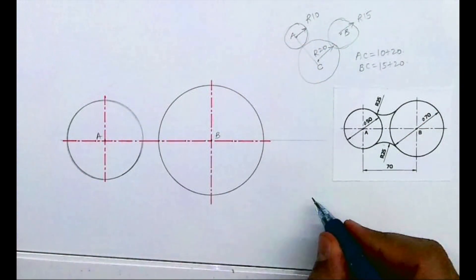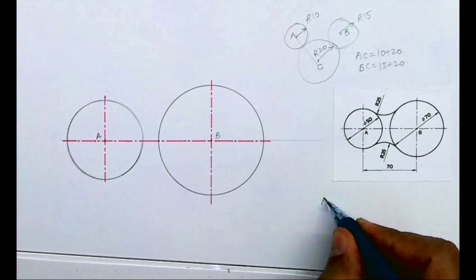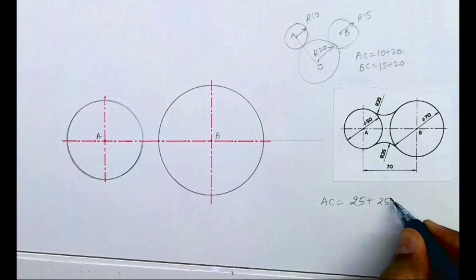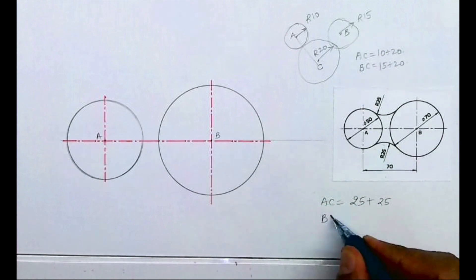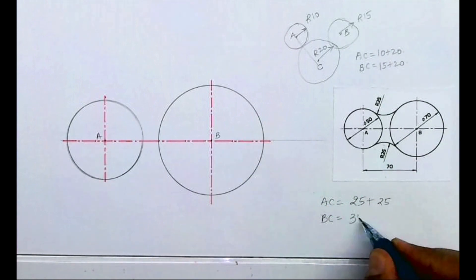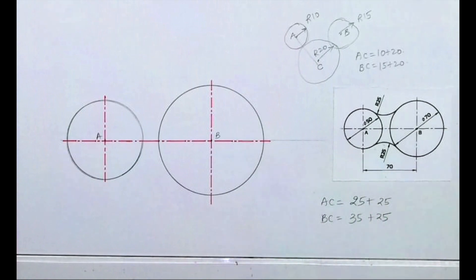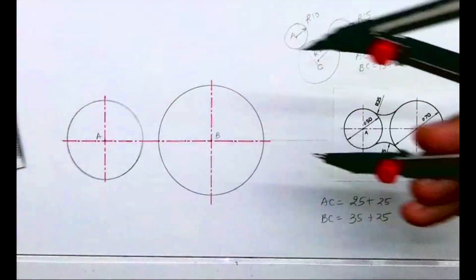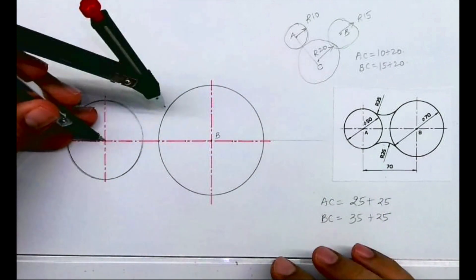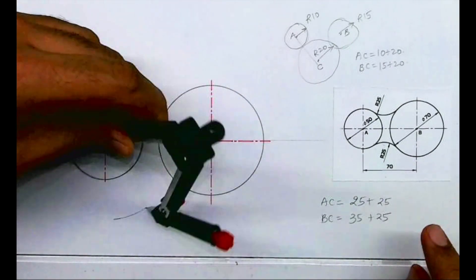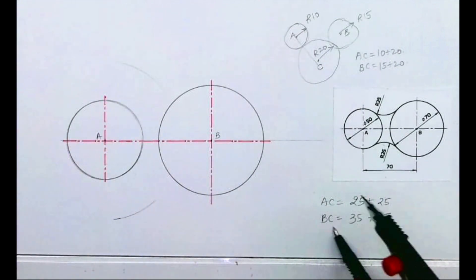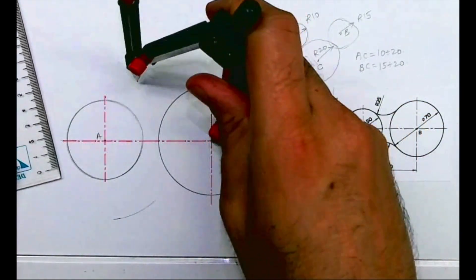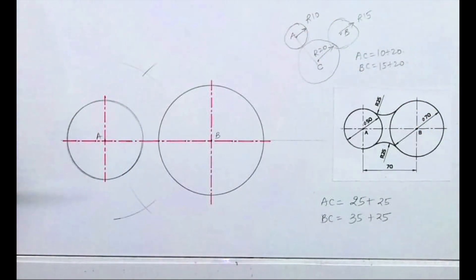From A, the distance to C would be 25 plus 25, which is 50. From B, I take 35 plus 25, which is 60, because radius is 35 and we need to draw radius 25. So from A I take 50 and cut an arc on both sides — up and down. From B I take 60 to get the required center point from where we can draw the arc.